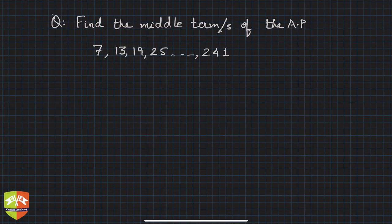Okay friends, let's solve another problem on finding the middle term of an AP. The question says find the middle term slash s. What does this mean? This means you don't know whether the number of terms is odd or even, so depending on that it could be either one middle term or two middle terms.